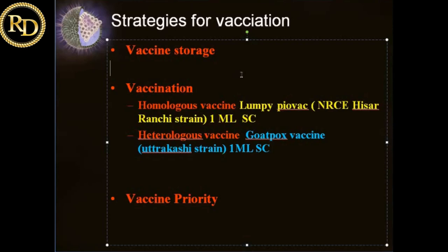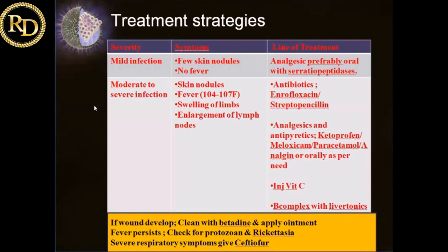Unaffected animals should be vaccinated on priority basis — affected animals and already vaccinated animals need not be vaccinated. For treatment strategies: mild infection with few skin nodules and no fever — analgesics, preferably oral with serratiopeptidase should be given. Moderate to severe infection with skin nodules, fever, swelling of limbs, and enlargement of lymph nodes — antibiotics, analgesics, injection of vitamin C, B-complex, and liver tonics need to be given. If wounds develop, they should be cleaned regularly with betadine. If fever persists, blood hematology should be done to check for protozoan and rickettsial infection.